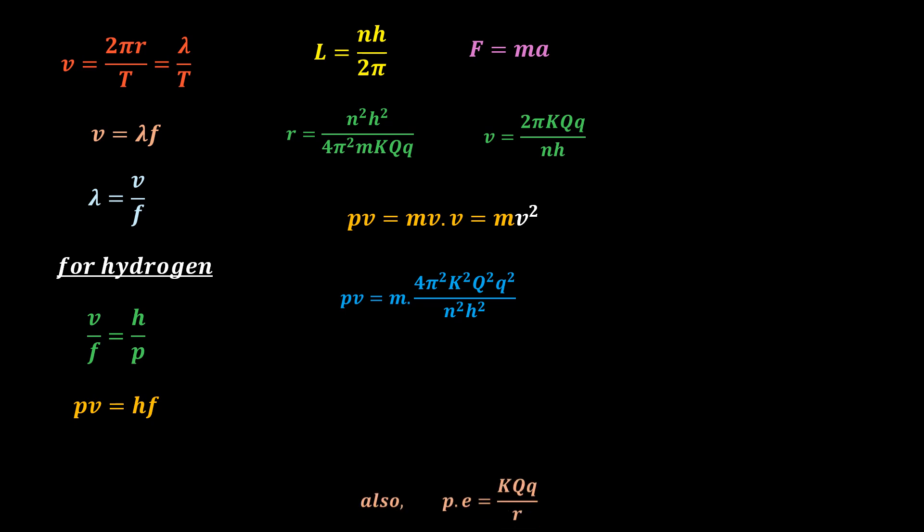Also, potential energy is defined as follows. Sub in the expression for r, and you get this, the same expression as that of pv. So, it is clear that pv is the potential energy of the particle, something which is generally misconstrued as the total energy of the particle.